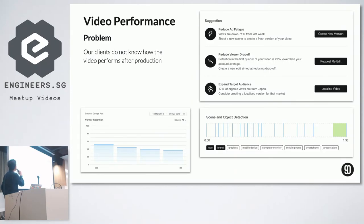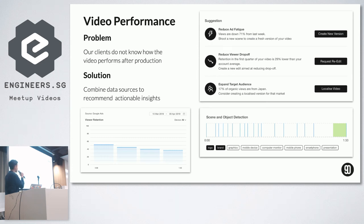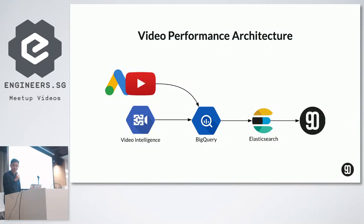Another application is video performance analysis. Once a video goes into production, brands need to know how well it is performing — whether there is viewer drop-off, which scenes or shots are unpopular, and which could cause viewers to stop watching. Using data from the Video Intelligence API as well as Google AdSense, we can identify certain entities or shots that could be iterated on to improve video performance, and recommend actionable insights. The architecture is similar to the video search engine — we combine AdSense and the YouTube API, feed into BigQuery, then Elasticsearch, and then our platform.